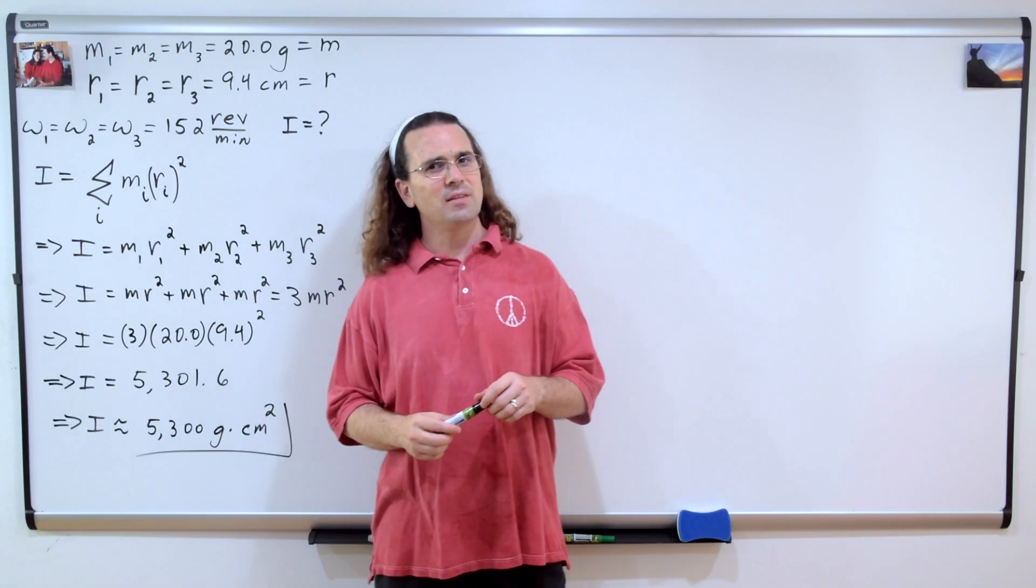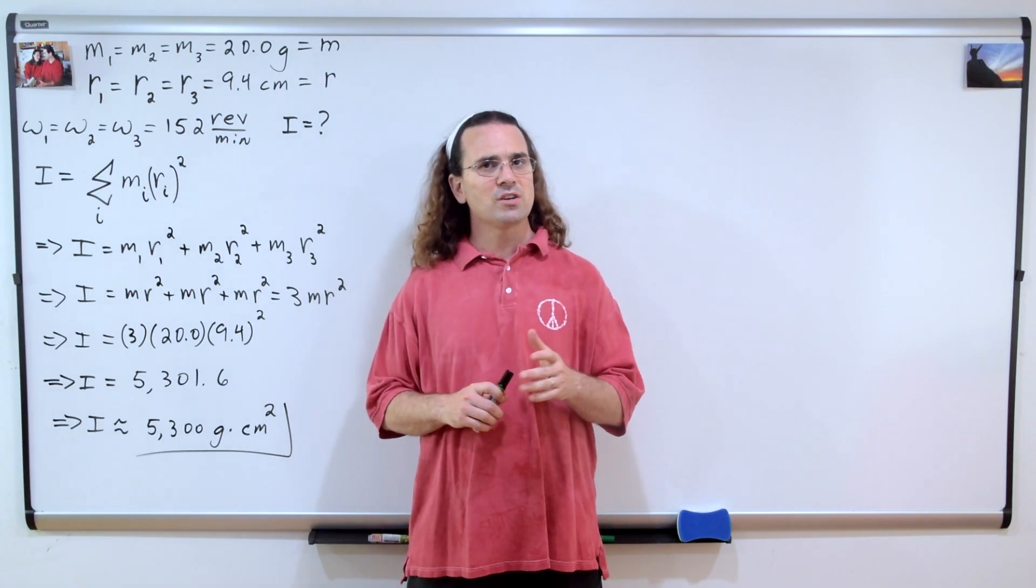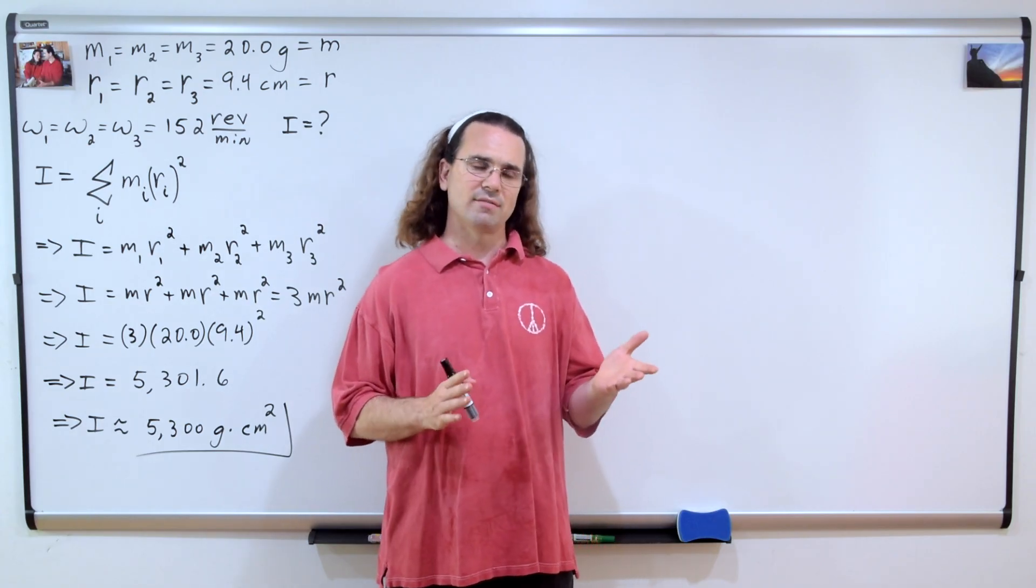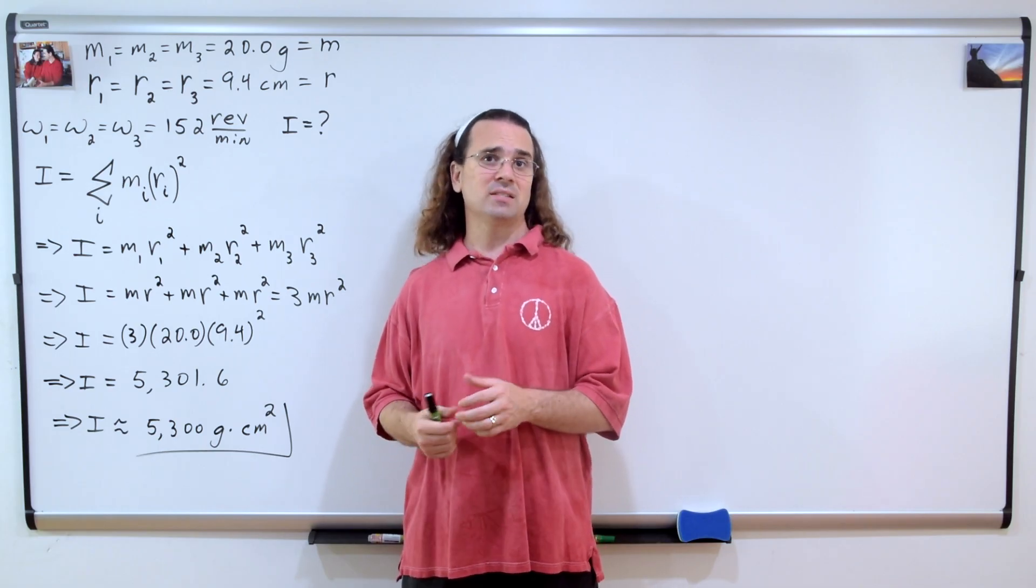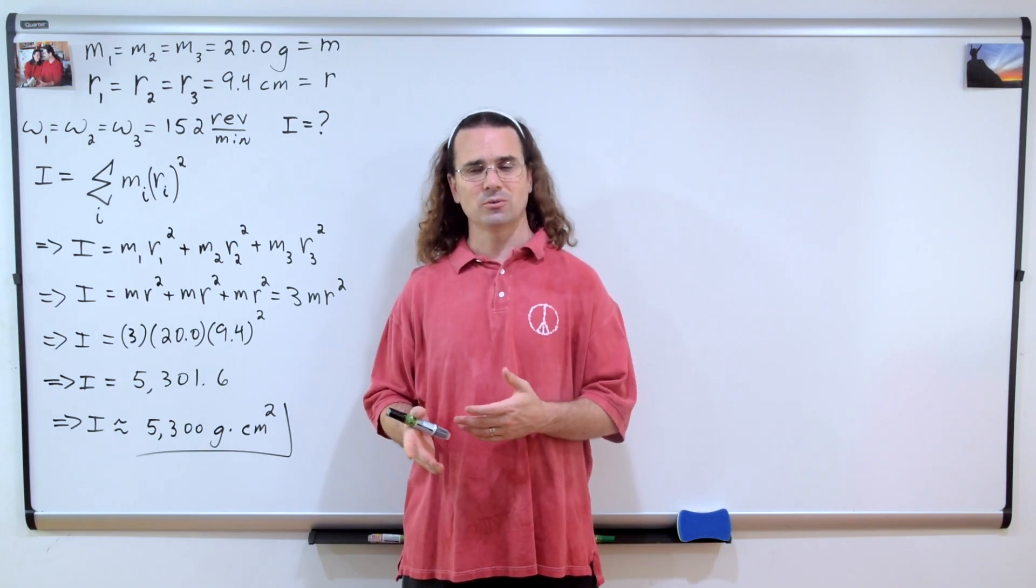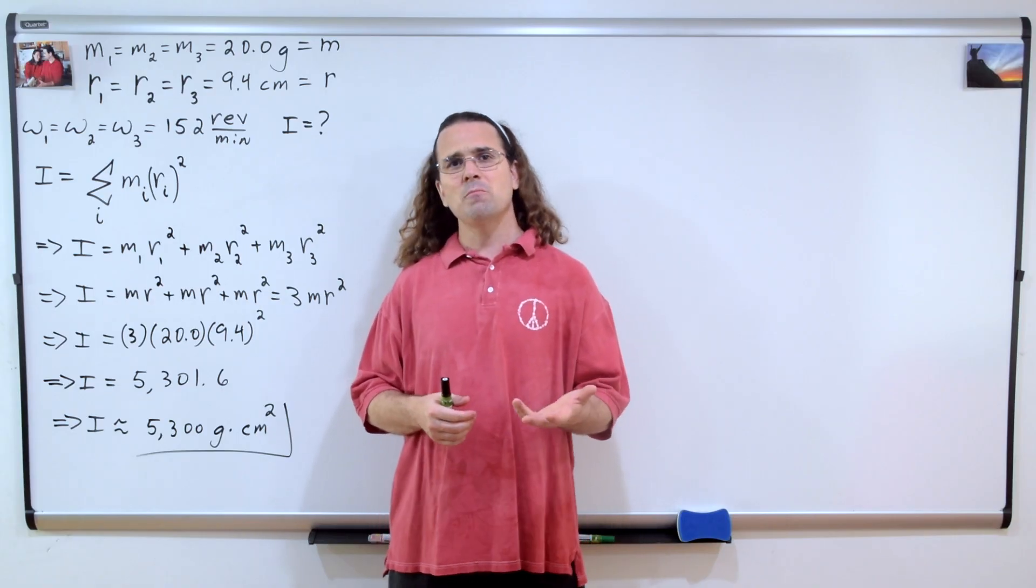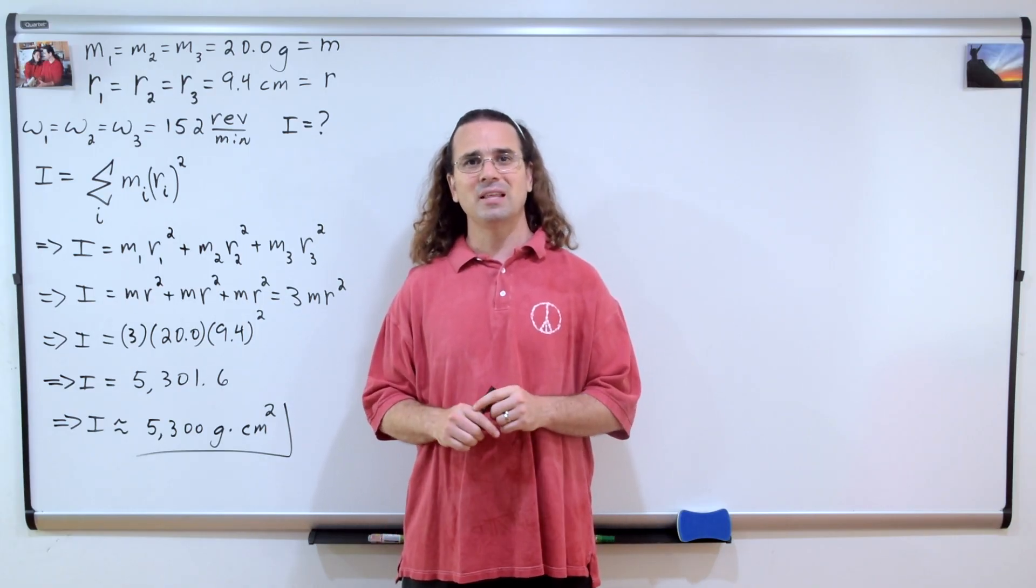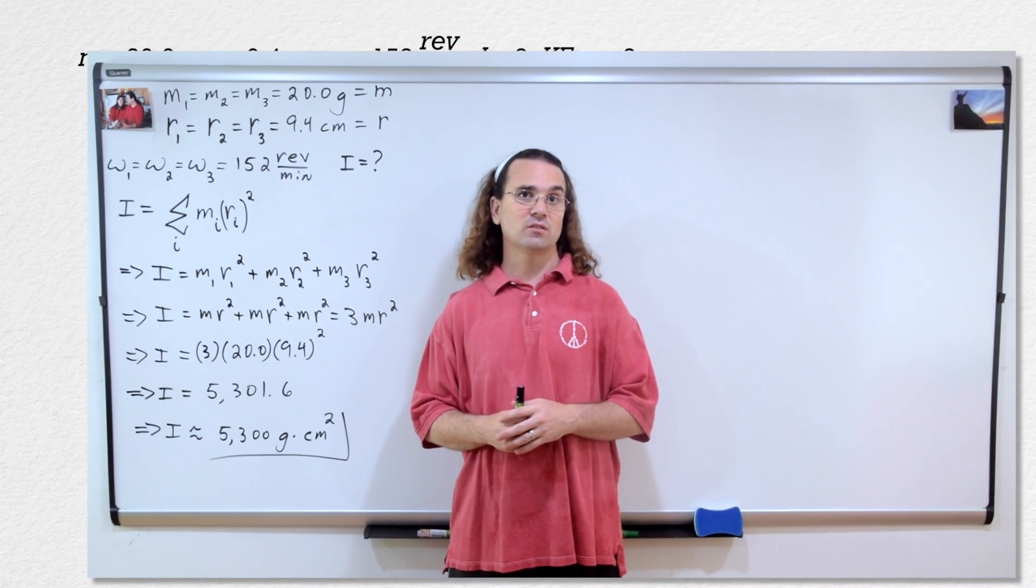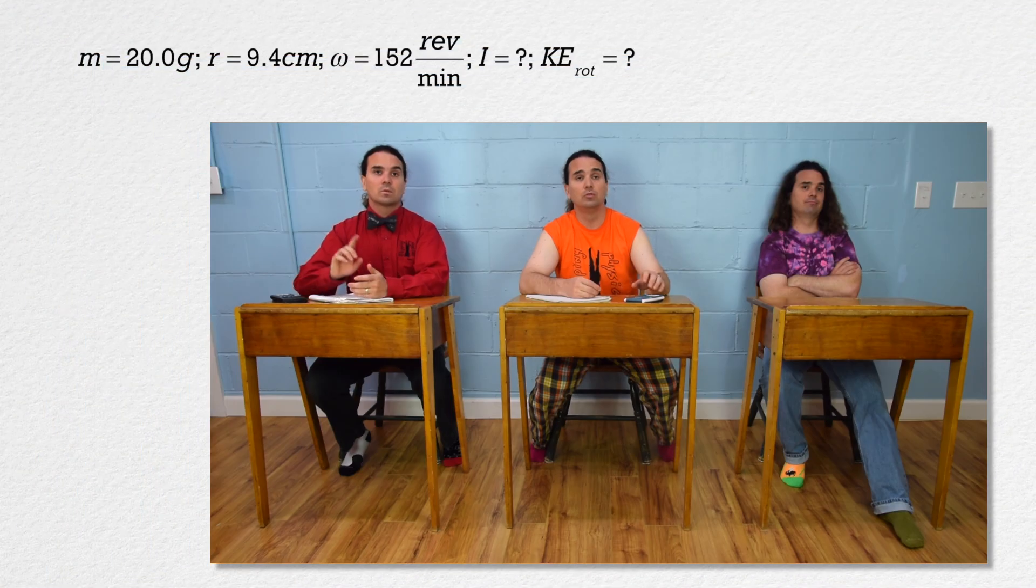Actually, Billy, it's not that gram centimeters squared are not right for the dimensions for a moment of inertia. It's just that you typically cannot use non-base SI units to find other values. Bobby, please go back to the beginning of the problem and solve everything again, only this time let's end with joules as our units for rotational kinetic energy. Sure.